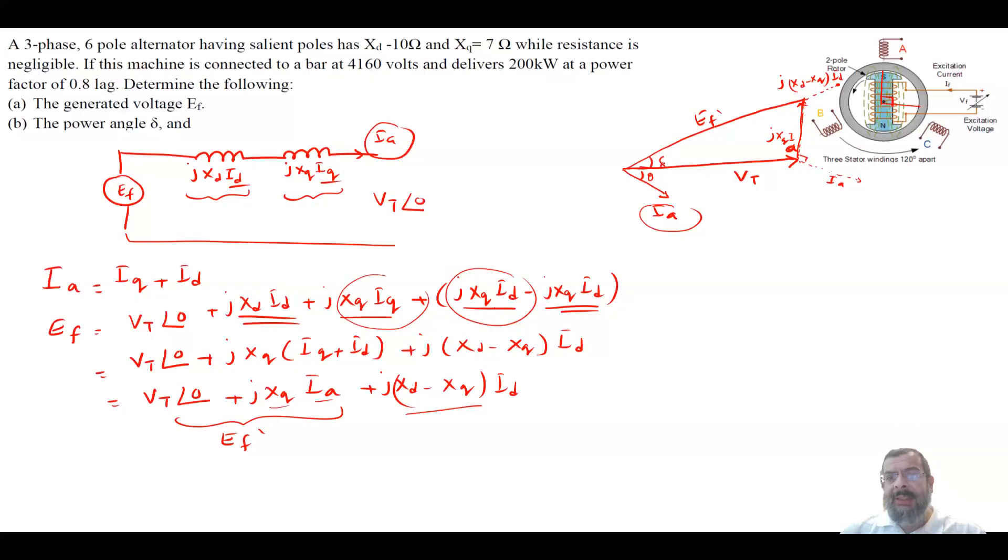Now this is your delta. Now the current will be decomposed into two components. One along with EF, which is basically the current component IQ, the quadrature component, and 90 degrees to this, which is your ID. So that is the equivalent phasor diagram for this type of questions. So now let's see how to analyze this.